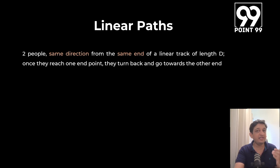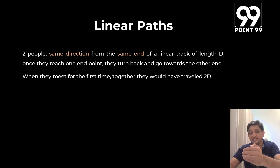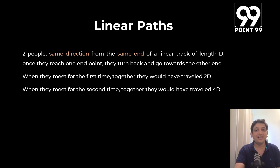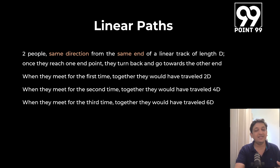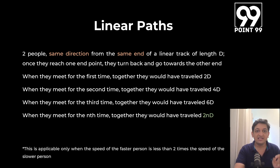The same concept applies when two people move in the same direction, starting from the same end of the linear track. The faster person reaches the other endpoint first, turns back, and then they meet. When they meet for the first time, cumulatively together they have covered 2D. For the second meeting, 4D; for the third, 6D; and for the nth meeting, 2n × D. Again, this is applicable only when the faster person's speed is less than two times the speed of the slower person.